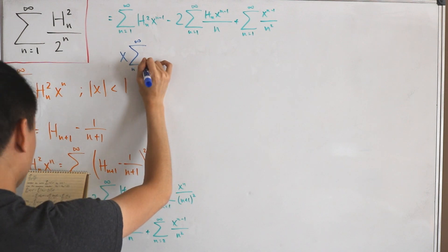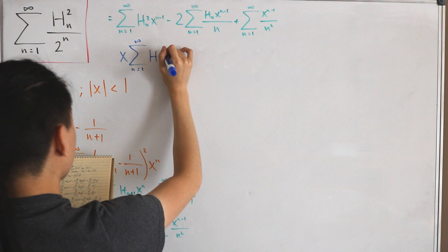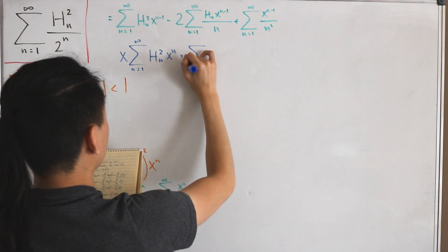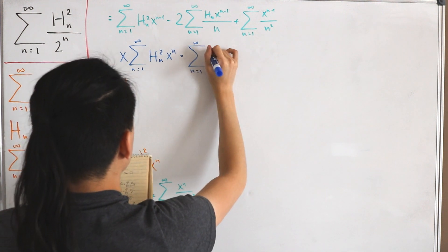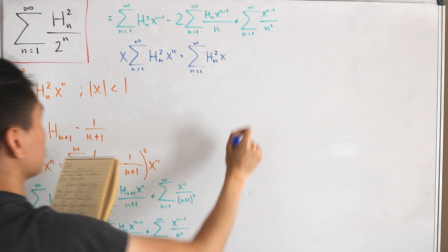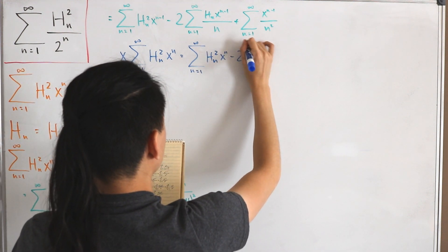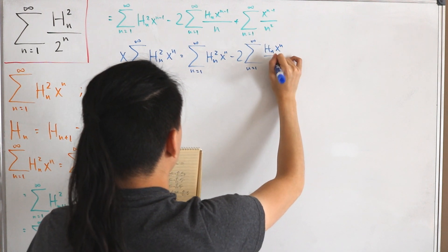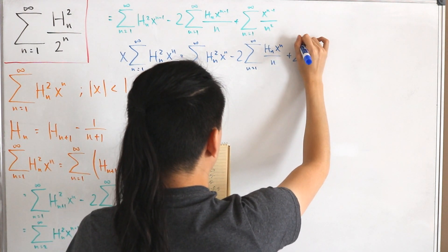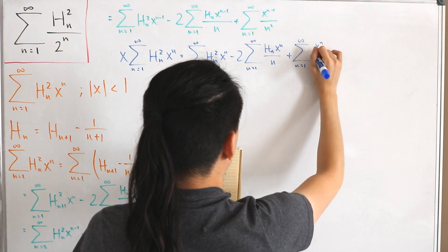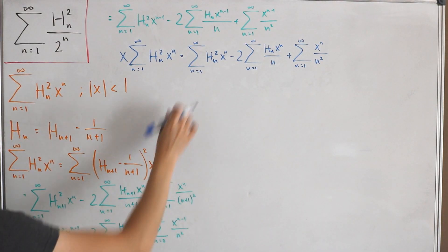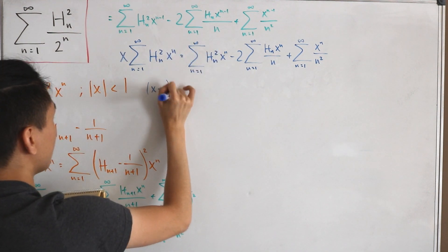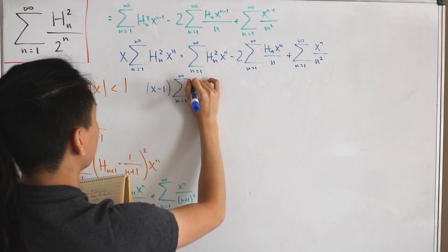Multiplying through by x, we get: x · Σ H_n² xⁿ equals Σ H_n² xⁿ minus 2 · Σ H_n · xⁿ/n plus Σ xⁿ/n². Rearranging by subtracting Σ H_n² xⁿ from both sides and factoring, we get: (x−1) · Σ H_n² xⁿ equals −2 · Σ H_n xⁿ/n plus Σ xⁿ/n².